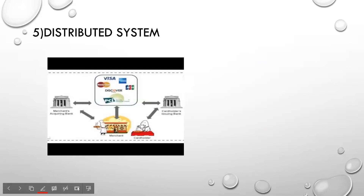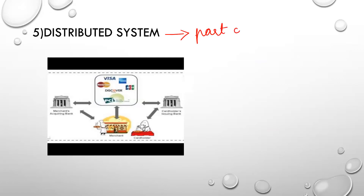Another characteristic is that embedded system is a distributed system. Distributed system means it is a part of a larger system. For example, when you go to a restaurant and pay your bill by card, the card is put into the card reader. The card reader will read the card — this card reader is a system. Then the control automatically goes to the bank, and there is a system in the bank that takes care of reducing the money from the card.